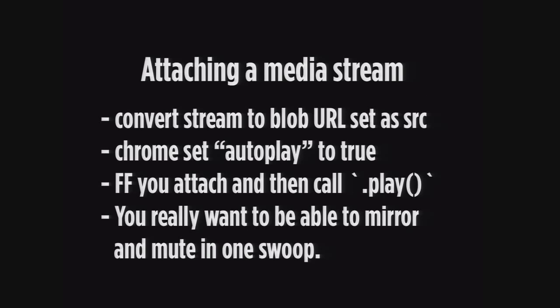So as a result, we create abstractions — we wrote a getUserMedia module to handle that part. Attaching a media stream is also something: once you request media you have the stream object, and it's your job to attach that to a video element or an audio element. The APIs are more similar now, but you have to convert it to a blob URL and attach it as a source. In Chrome you set autoplay to true; in Firefox you attach it and call play. You often want to mute the user's own video so they don't echo back to themselves. So now that's another module we were maintaining.